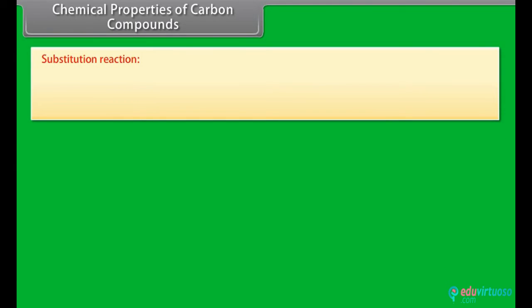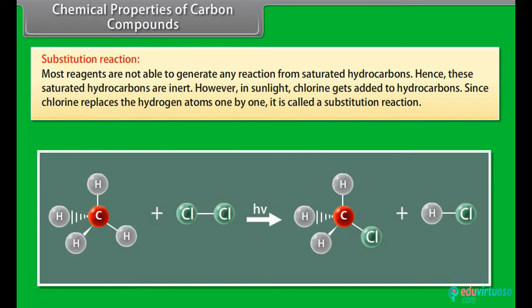Substitution reaction. Most reagents are not able to generate any reaction from saturated hydrocarbons. Hence, these saturated hydrocarbons are inert. However, in sunlight, chlorine gets added to hydrocarbons. Since chlorine replaces the hydrogen atoms one by one, it is called a substitution reaction.